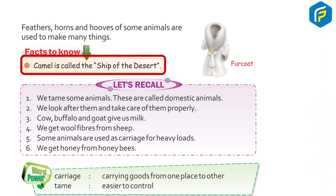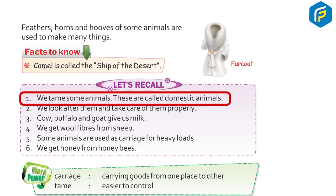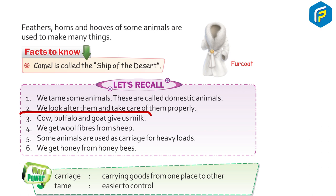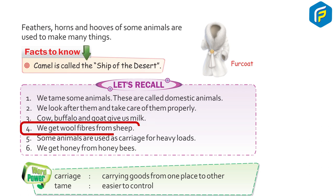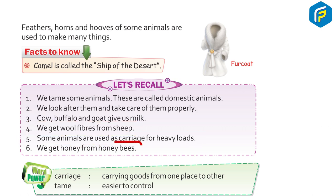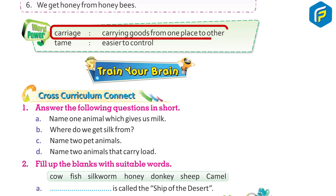Let's recall: one, we tame some animals — these are called domestic animals. Two, we look after them and take care of them properly. Three, cow, buffalo, and goat give us milk. Four, we get wool fibers from sheep. Five, some animals are used as carriage for heavy loads. Six, we get honey from honeybees. Word power: carriage means carrying goods from one place to another. Tame means easier to control or train.